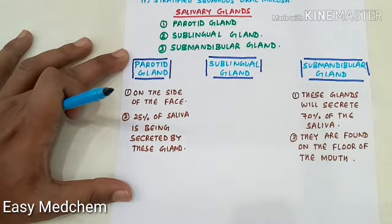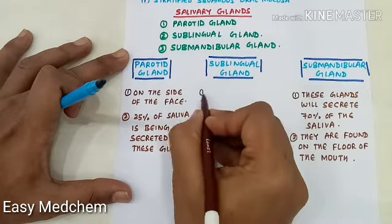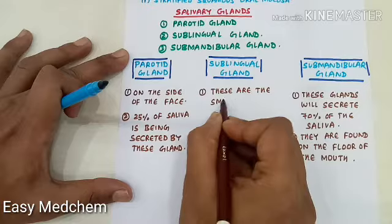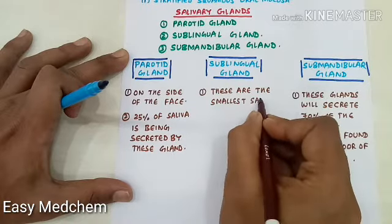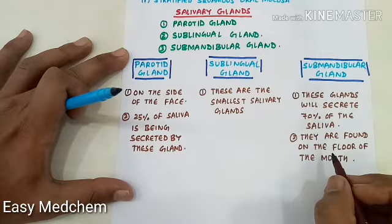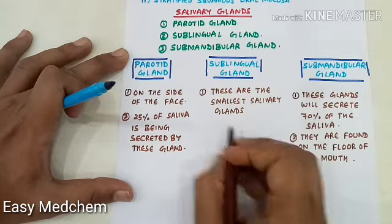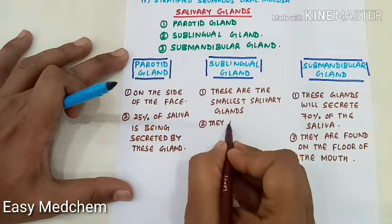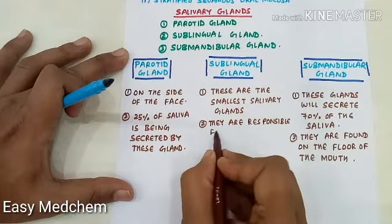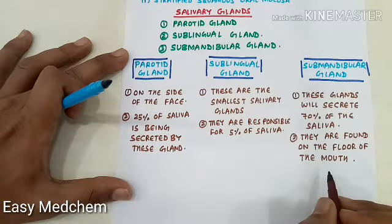The third salivary gland is the sublingual gland. The sublingual glands are the smallest salivary glands, covered by a thin layer of tissue at the floor of the mouth. They produce approximately 5% of the saliva, and the secretions are very sticky due to a large concentration of mucin. Their main functions are to provide buffering and lubrication.